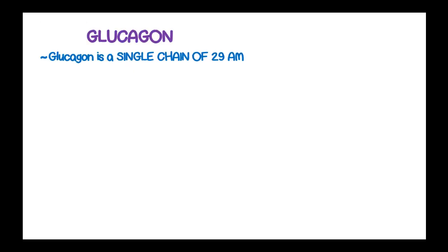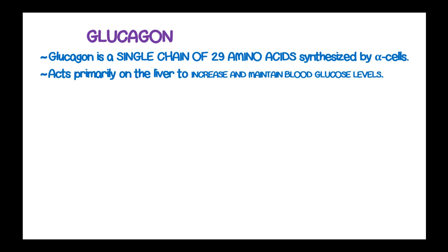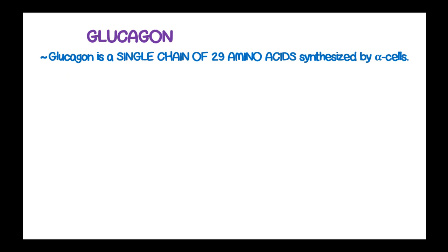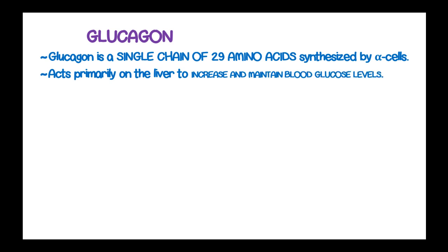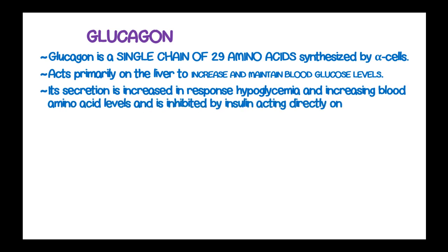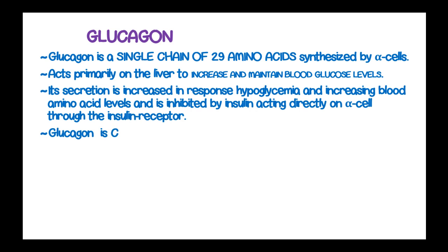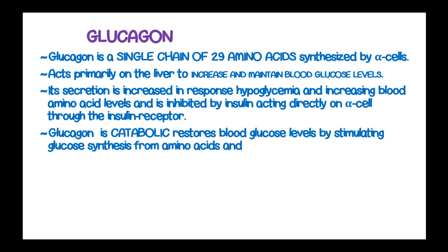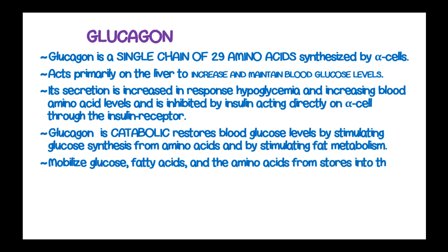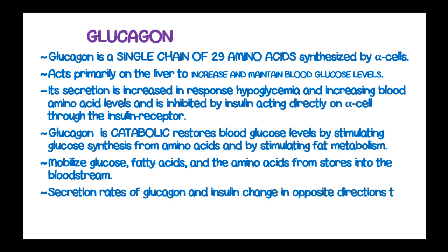Glucagon is a single chain of 29 amino acids that is synthesized by the alpha cells. Glucagon acts primarily on the liver to increase and maintain blood glucose levels. Its secretion is increased in response to hypoglycemia or declining blood glucose and increasing blood amino acid levels, and is inhibited by insulin acting directly on the alpha cells through the insulin receptor. Glucagon is catabolic and restores blood glucose levels by stimulating glucose synthesis from amino acids and by stimulating fat metabolism, sparing glucose. It mobilizes glucose, fatty acids, and amino acids from cells into the bloodstream, and the secretion rates of glucagon and insulin change in opposite directions to maintain blood glucose homeostasis.